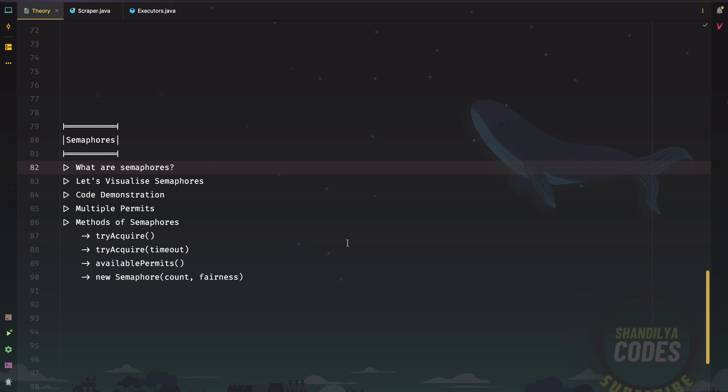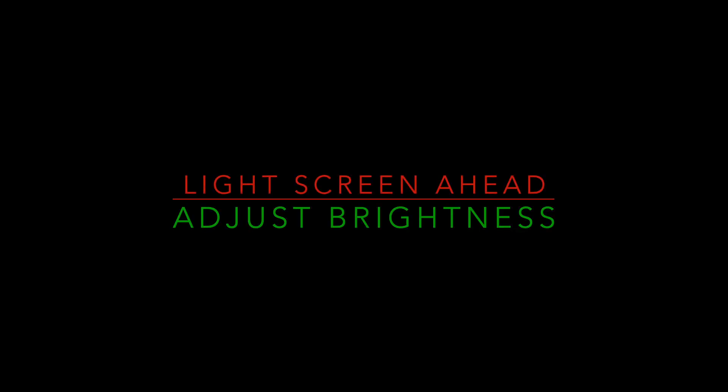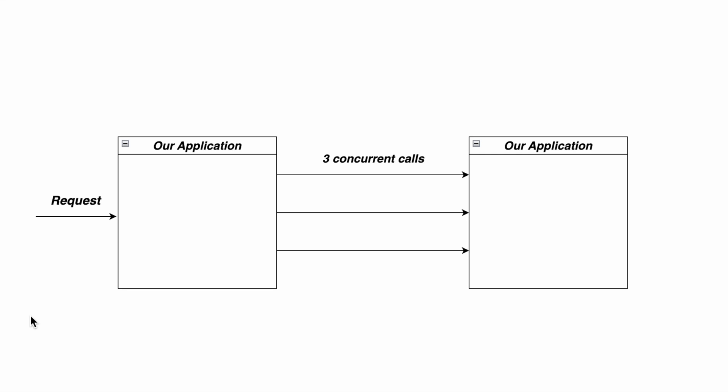With having known the definition, let's understand how semaphore is used with some visualization. Imagine we are building an application which needs to connect to a third-party service — this is our application and this is the third-party service.